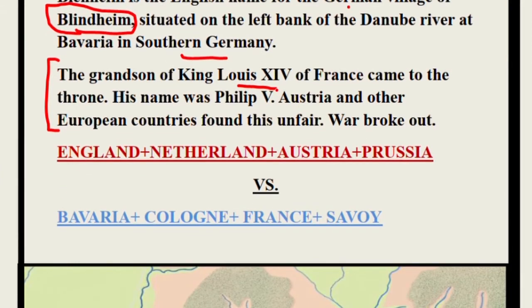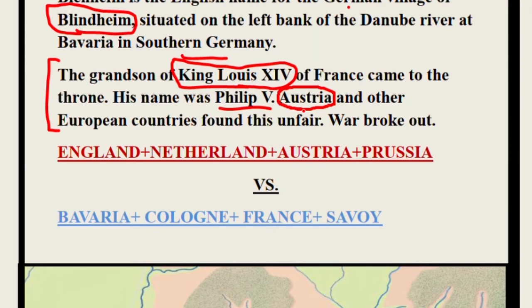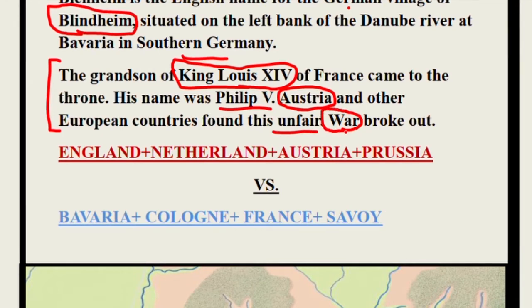King Louis XIV of France made his grandson Philip V the next king. This did not satisfy Austria and the other European countries — they found it unfair that Philip V would be the king. And that is why war broke out.